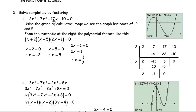Performing synthetic division with negative 2 on coefficients 2, negative 7, negative 17, 10: bring the 2 down, multiply by negative 2 to get negative 4, add to negative 7 for negative 11, multiply by negative 2 to get 22, add to negative 17 for positive 5, multiply by negative 2 to get negative 10, add to 10 for remainder zero. So x plus 2 is a factor, and we've reduced to 2x squared minus 11x plus 5. From the graph, 5 looks like another root.